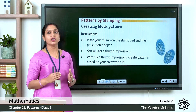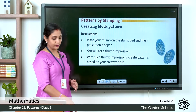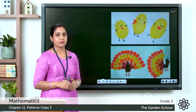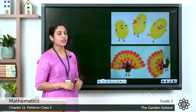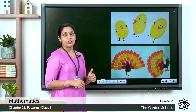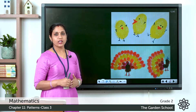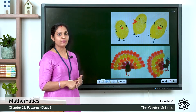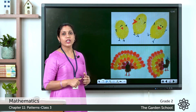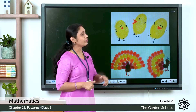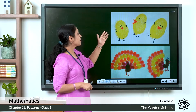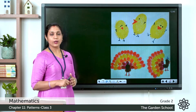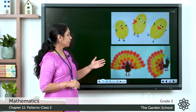Using thumb impressions we can create different patterns according to our creativity. In the first picture you can see three chicks. To make them, take yellow watercolor or acrylic paint, dip your thumb in the paint, press it on the paper, then add beaks and legs — it becomes a chick.